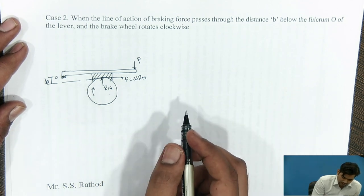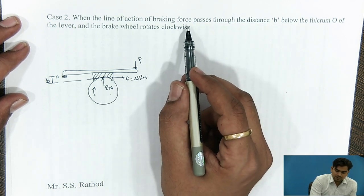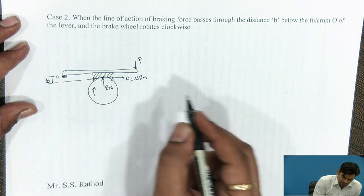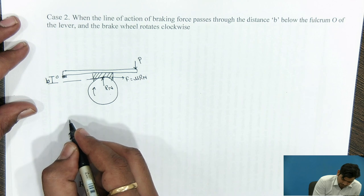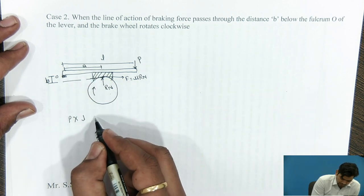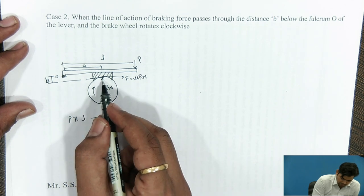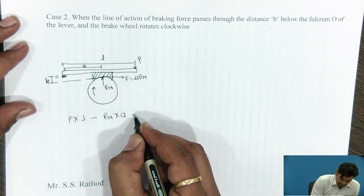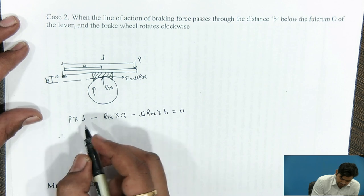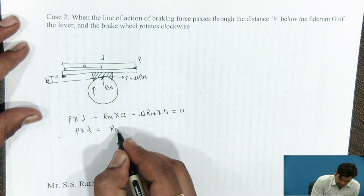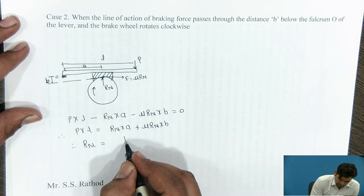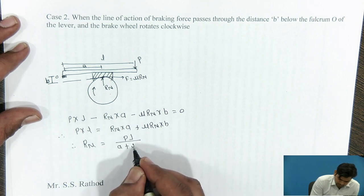To find the value of Tb when the drum rotates in the clockwise direction and the braking force passes through distance B below the fulcrum O, we take moments about the fulcrum O. So: P into L minus Rn into distance A minus μRn into distance B is equal to 0. Therefore P into L equals Rn into A plus μRn into B, giving Rn = PL / (A + μB).